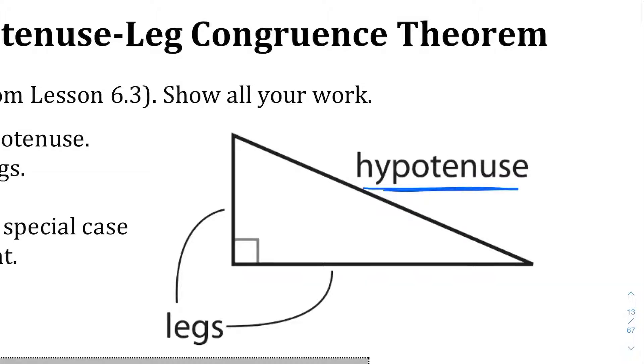So the hypotenuse is the longest side of a triangle. And in terms of when it's a right triangle, the easy way to tell which side is a hypotenuse is that it's the one directly across from the right angle. So if you can identify where the right angle is, or if you can take a look at that little square, it's the side that is across from that right angle.